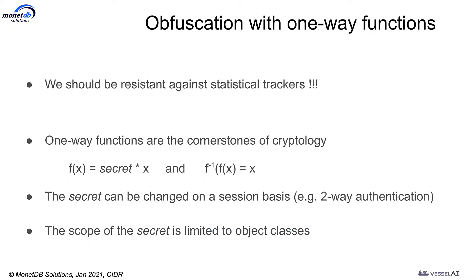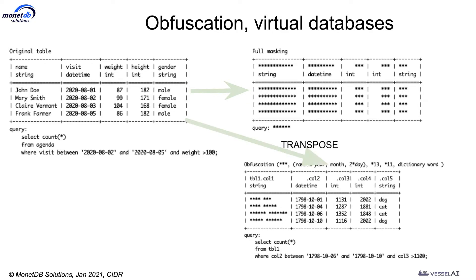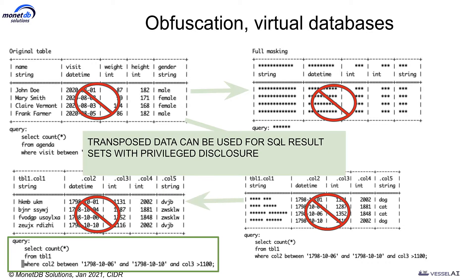So the next step of obfuscation was to use one-way functions. One-way functions are the cornerstone of cryptography, and in essence you multiply a secret against all of the values in such a way that you can, by inversion, retrieve the original value. The trick here is that as long as you can keep the secret key not available, you can mask information. The secret key in our case can be changed on a session basis. Full masking doesn't tell us much, but now we are going to transpose it — we are going to use these one-way functions to obfuscate the data. From a lawyer's point of view, we don't see any of the real data.